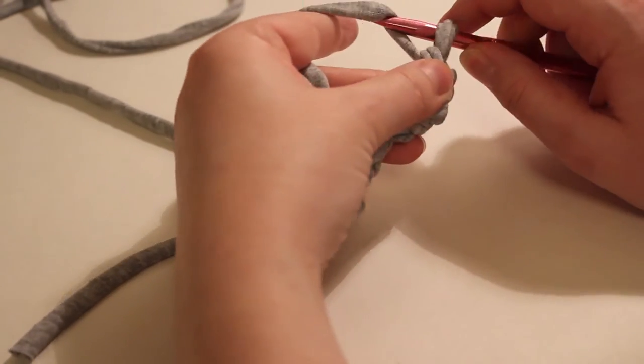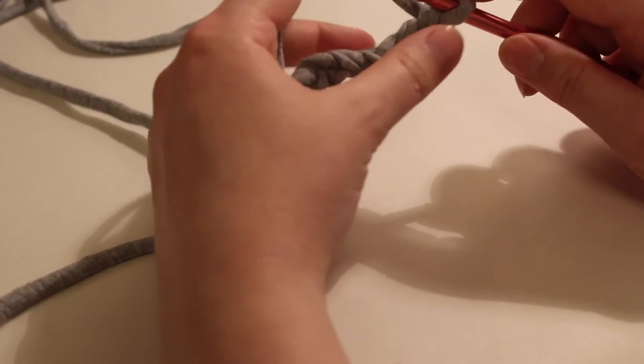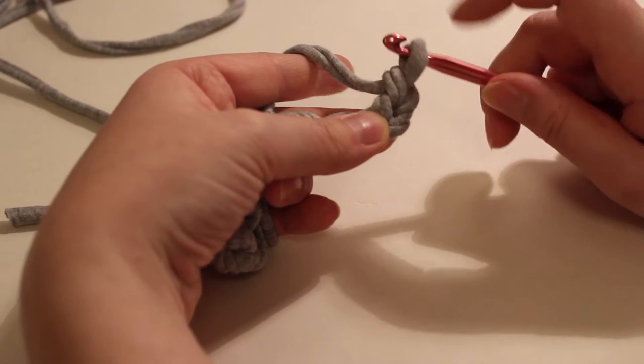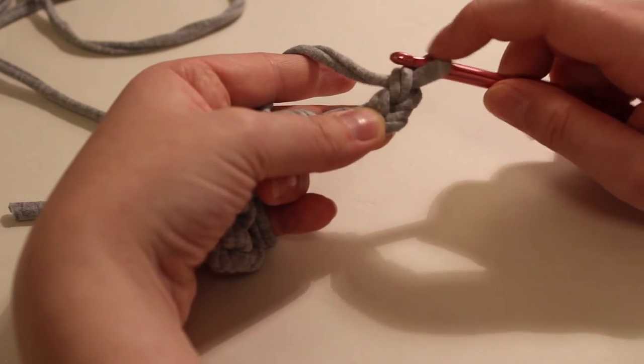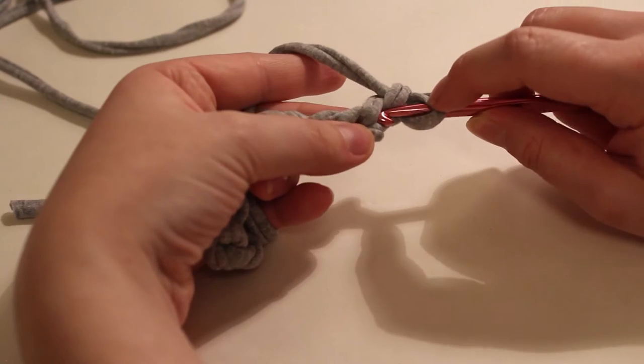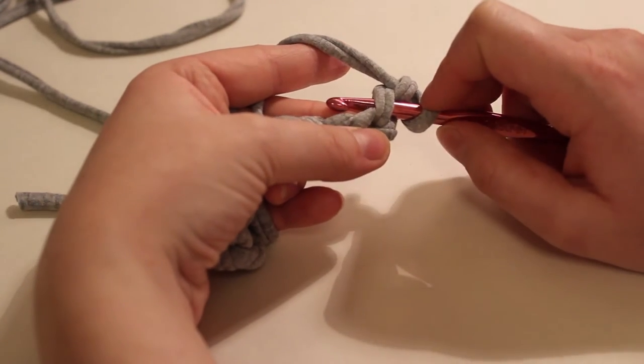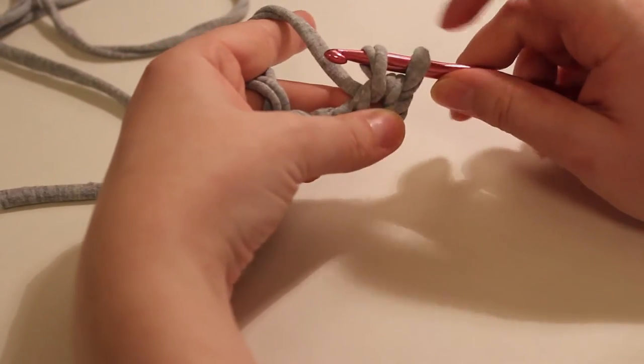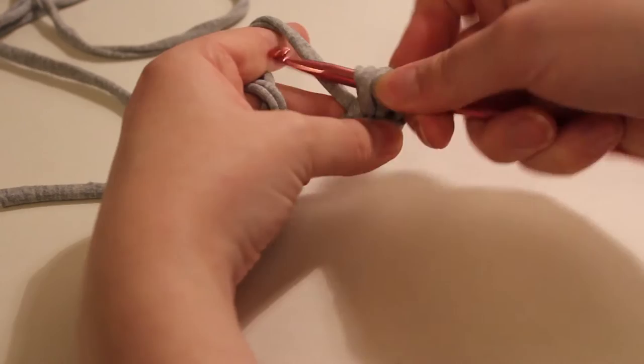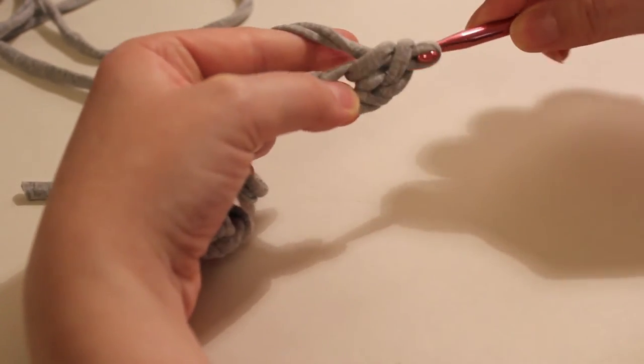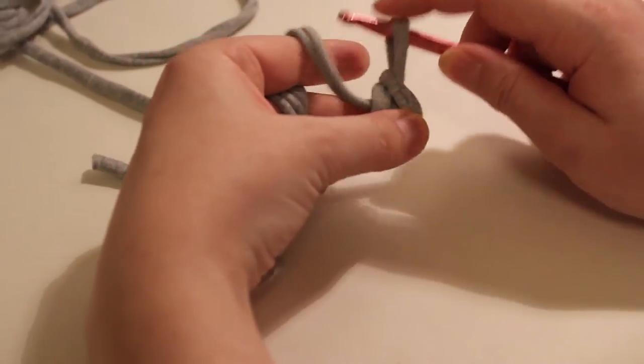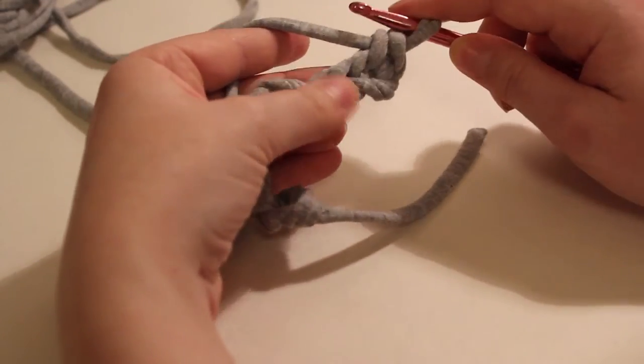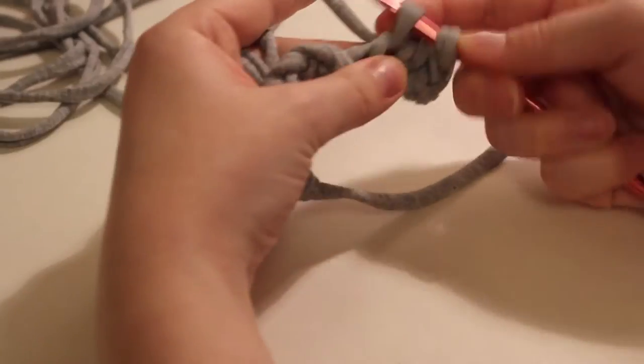When you have the size that you want, chain one more, and that is just to get some height on our first stitch. Then you're going to skip this—you can't really work into that one because you have your stitch coming out of it—so you're going to go into essentially the second stitch from the hook. Yarn over and draw up a loop like that. Now we have two loops on your hook, and if you yarn over and go through both of those, you will have made one single crochet in American terms.